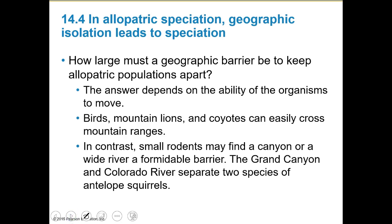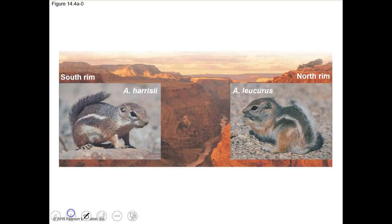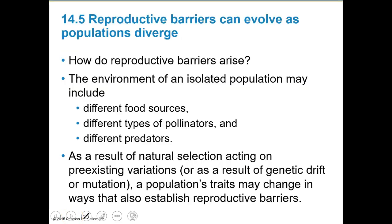How large must a geographic barrier be to keep allopatric species apart? The answer depends on the ability of the organism to move. Birds, mountain lions, and coyotes can all cross mountain ranges — no big deal. But small rodents find a canyon or wide river an actual barrier. For example, the Grand Canyon and the Colorado River separate two species of antelope squirrels — they're the cutest little guys but they're a different species.